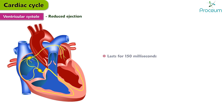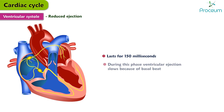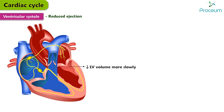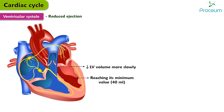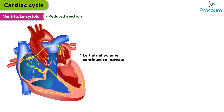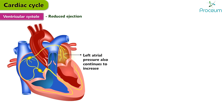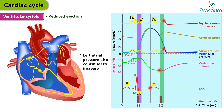Reduced ejection. This lasts for about 150 milliseconds, and during this phase ventricular ejection slows because of the basal beat. Left ventricular volume decreases more slowly, reaching its minimum value of close to 40 mL, called the end-systolic volume. The left atrial volume continues to increase due to continued refilling of the left atrium, and left atrial pressure also continues to increase, increasing the magnitude of the V wave. The end of the T wave is recorded on the EKG.